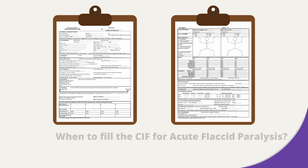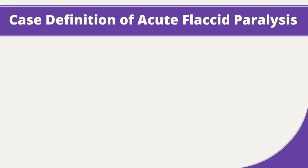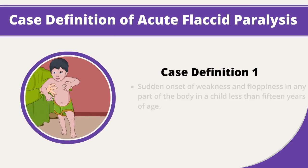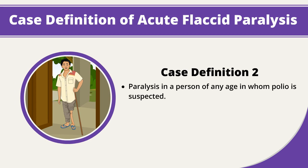In this video, you will learn about filling the CIF for acute flaccid paralysis cases. Fill the CIF for all cases having sudden onset of weakness and floppiness in any part of the body in a child less than 15 years of age within 6 months of paralysis onset, or paralysis in a person of any age in whom polio is suspected.